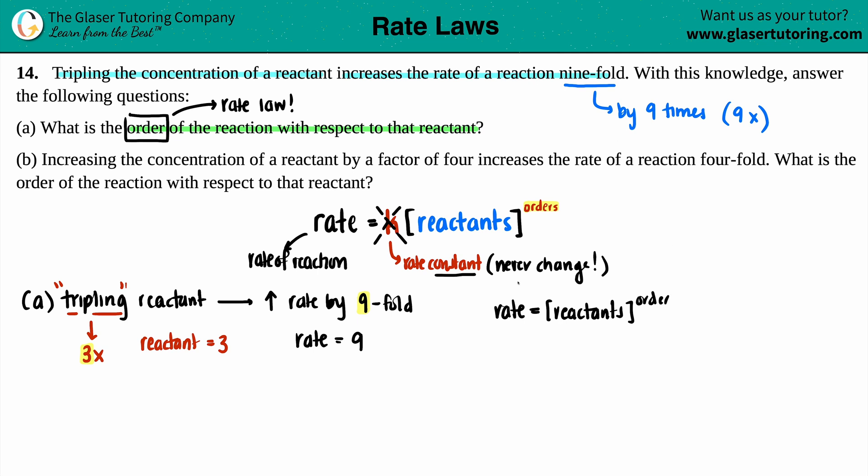I bring it down to rate equals just the reactants raised to the order. The rate number we said was nine, so 9 equals the reactant value, which was 3, and we're trying to find that X value. Three to the what will get me nine? If you have an exponent, that means you're taking your number and timesing it by itself X amount of times to get to nine. Three times three is nine. And how many threes did I use? I used two of them. So my X value would equal 2.